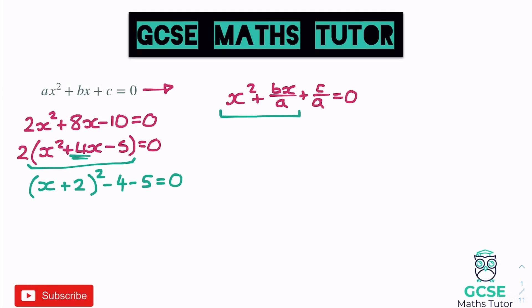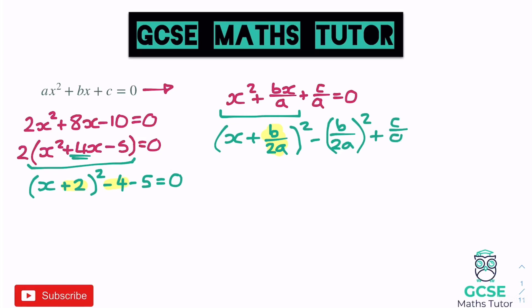Applying the same process to our general equation: I complete the square for the x terms. I halve the coefficient of x, so half of b/a is b/2a. That gives (x + b/2a)². Just like before, we have to subtract (b/2a)² to compensate, then add the remaining + c/a, all equal to zero.